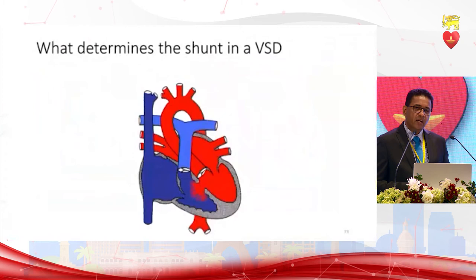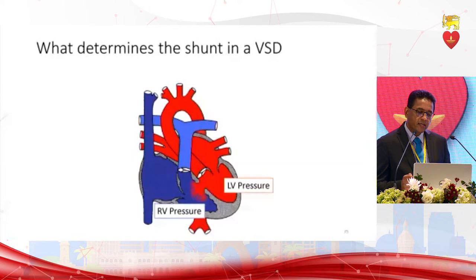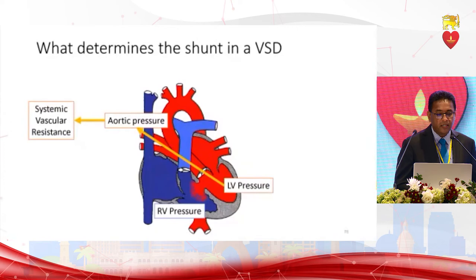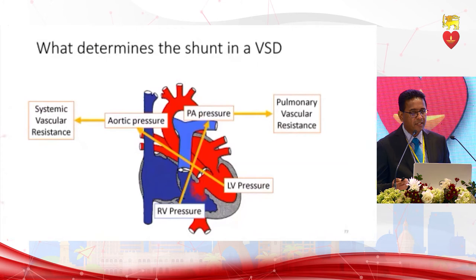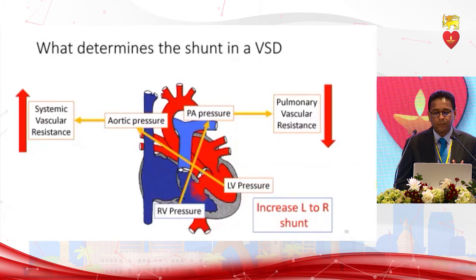What determines the shunt in a VSD? The size of the defect, LV and RV pressures. LV pressure depends on aortic pressure, which depends on systemic vascular resistance. RV pressure depends on pulmonary artery pressure, which depends on pulmonary vascular resistance. Therefore, anything that increases systemic vascular resistance and drops pulmonary vascular resistance will increase the left-to-right shunt.